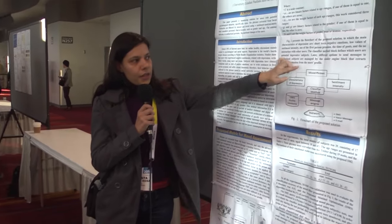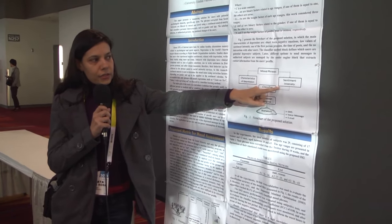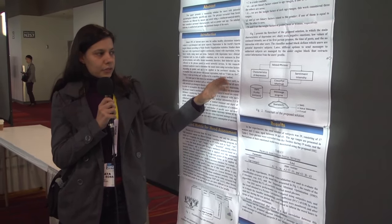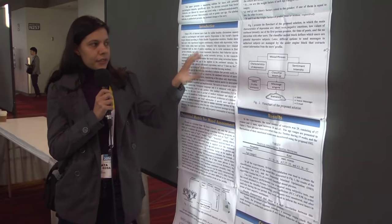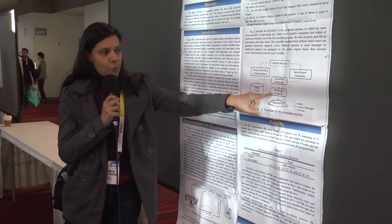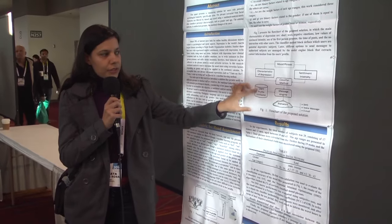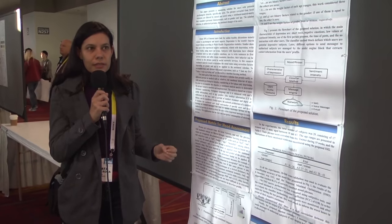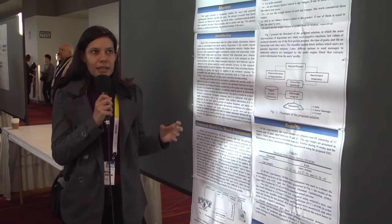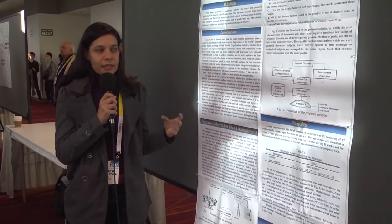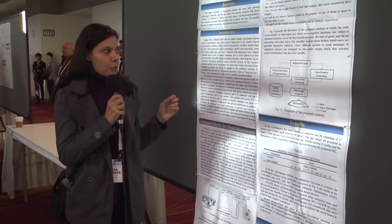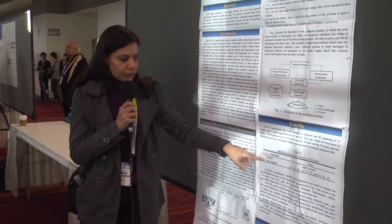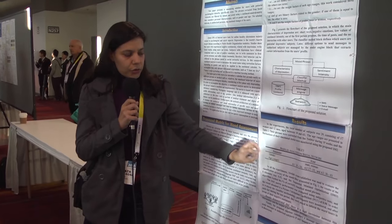The traditional sentiment intensity metric with the characteristics of depression — considering gender and words — uses a classifier method. Incorporating the user's profile, the system can send a message to the family if the person has characteristics of being very sad or shows some point of depression.